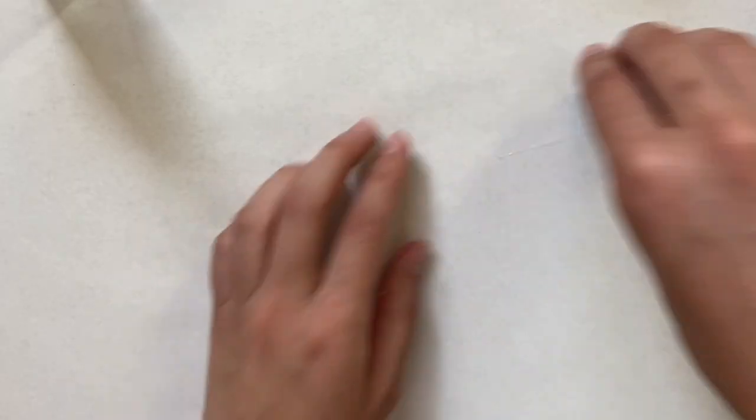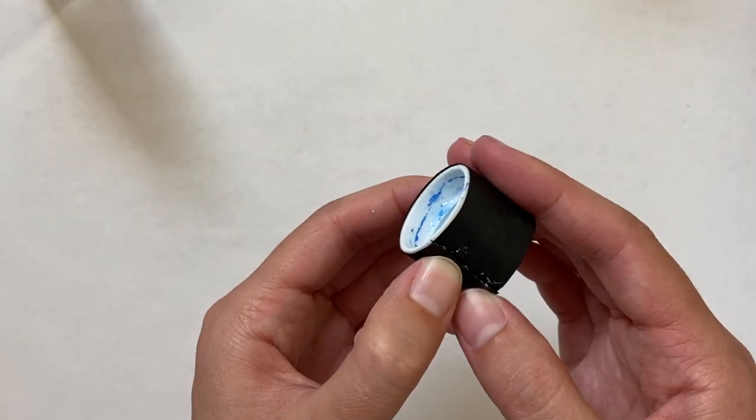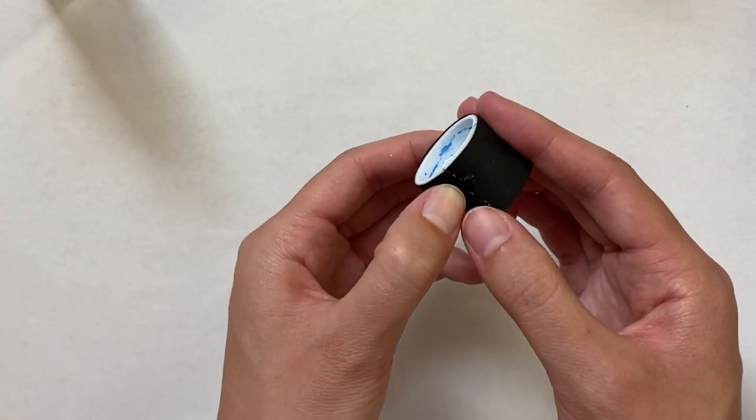The seam got kind of messy for me, you could see the glue sticking out, but I later painted this part black so it wasn't as noticeable.